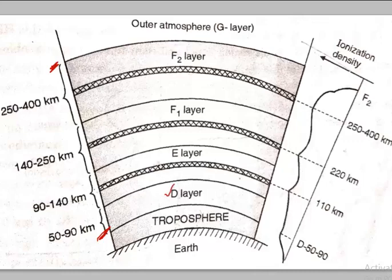The first layer is the D layer, then we have the E layer which is sometimes divided into normal E and sporadic E. Then we have the F layer, which is divided into F1 and F2. As we can see from this diagram, the ionization density is maximum in the F2 layer.